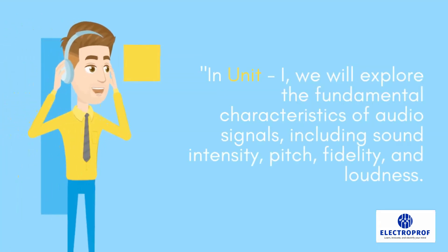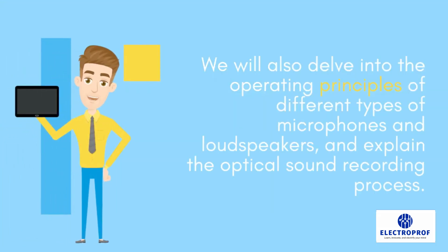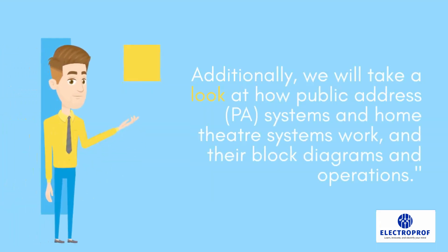In Unit 1, we will explore the fundamental characteristics of audio signals, including sound intensity, pitch, fidelity, and loudness. We will also delve into the operating principles of different types of microphones and loudspeakers, and explain the optical sound recording process. Additionally, we will take a look at how public address systems, power systems, and home theater systems work, along with their block diagrams and operations.